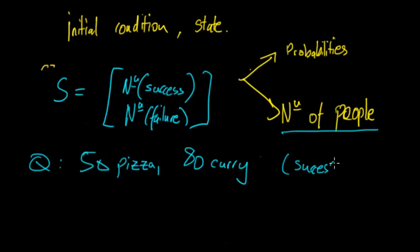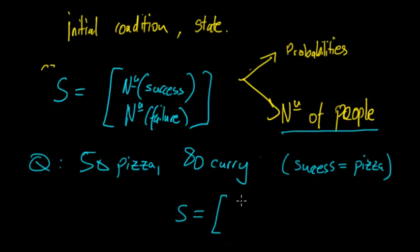We're saying that success equals pizza. Remember, it doesn't matter which one you choose - you just need consistency throughout the question. Then S is equal to 50 over 80. That's how you set up the initial condition, and it becomes a lot easier once you do a few questions.